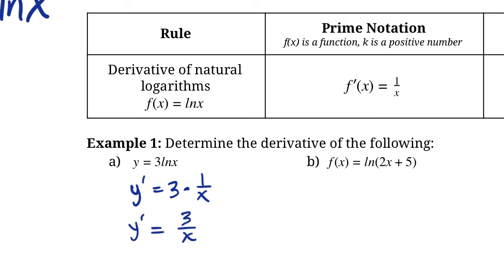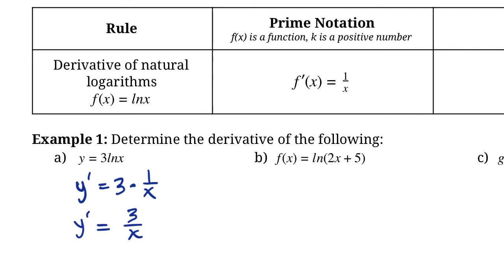Second question — I'd encourage you to pause the video and try these yourself before we go further. So f prime of x: we have a function inside the ln now, so we're going to use the chain rule. The derivative of ln x is 1 over x, but we have 2x plus 5 inside. So it's 1 over 2x plus 5, times the derivative of the inside, which is 2. We can simplify by putting that 2 in the numerator.